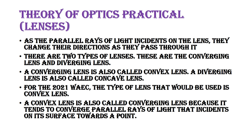As parallel rays of light hit the lenses, they change direction due to the difference in optical densities. There are two types of lenses: converging lens and diverging lens. A converging lens is also called a convex lens, while a diverging lens is also called a concave lens. For the 2021 WAEC exam, the type of lens used is a converging lens — a convex lens.